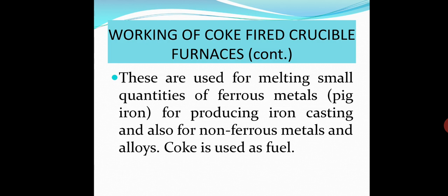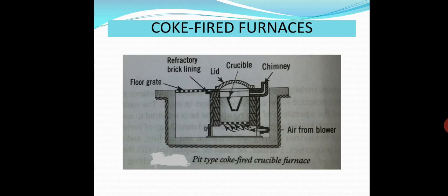These are used for melting small quantities of ferrous metals, pig iron, for producing iron casting, but mostly used for non-ferrous metals and alloys. So, coke is used as fuel. This is the diagram of pit-type coke-fired crucible furnace. With the help of a blower, air is drawn into the furnace and coke is burnt surrounding the crucible. And a chimney is there for removing the burned gases.